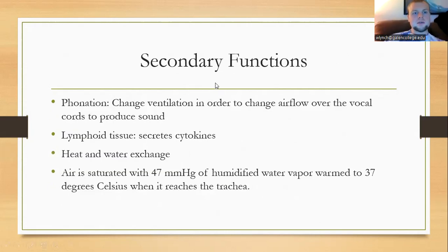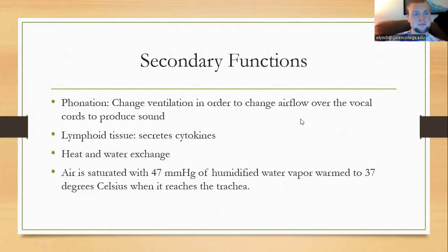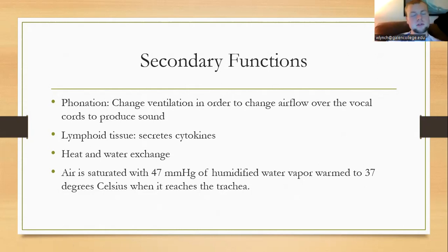Secondary functions of the respiratory system include phonation — producing sound as airflow goes over the vocal cords. We also have lymphoid tissues that secrete cytokines, which are inflammatory lipid mediators. We can do a small degree of heat and water exchange: we breathe off water vapor when breathing out, and we also breathe off heat. Air is saturated with 47 mmHg of humidified water vapor, and as it enters the body it is warmed to body temperature as it goes through the trachea.